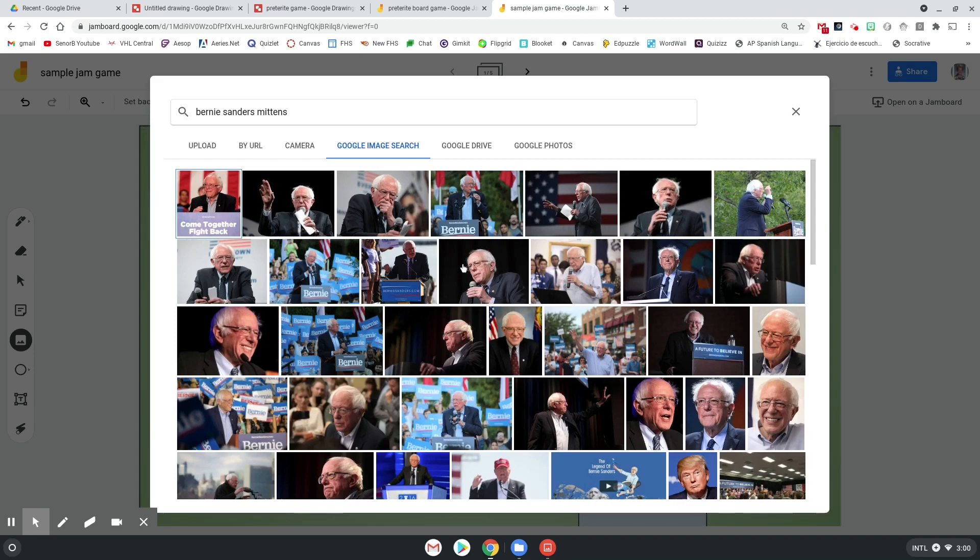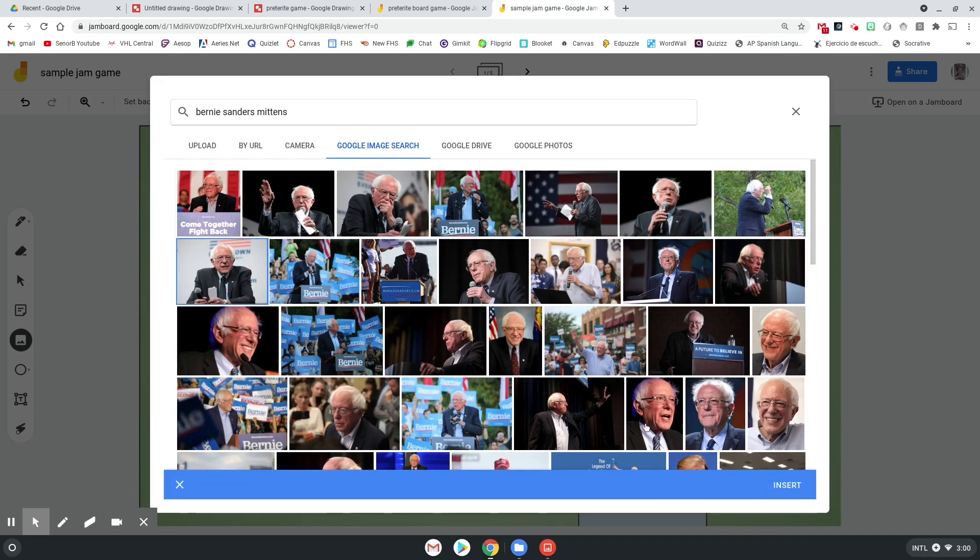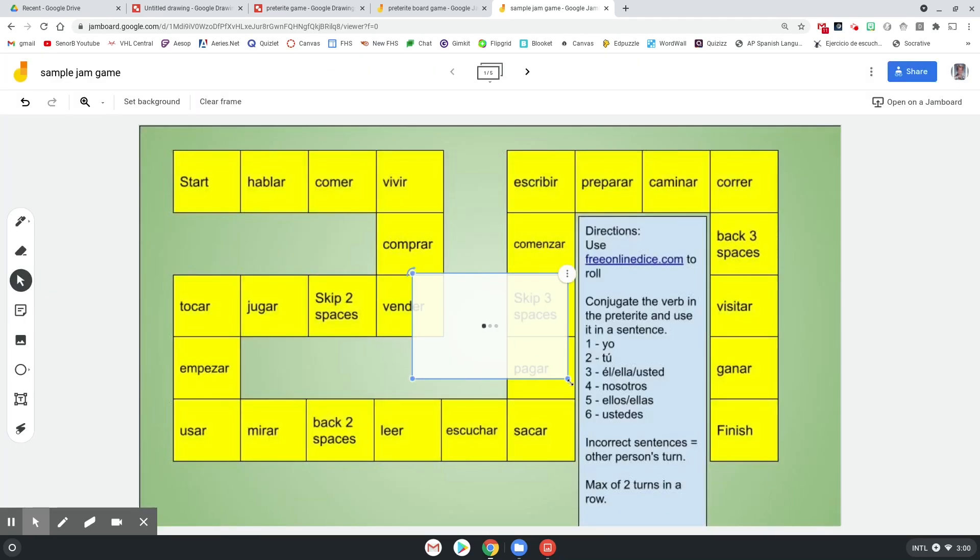Oh, Google's disappointing me. All right, so we're going to Bernie Sanders insert. They're going to resize that a little bit. So we'll have each student will pick a picture that they want to be. They'll be on the start here.